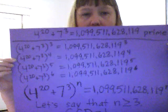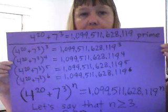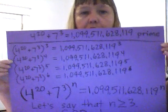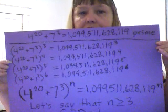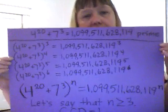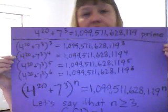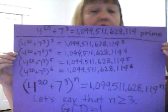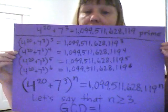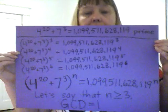Another equation — counter example. 4 to the 20th plus 7 to the 3rd equals 1,099,511,628,119 — another prime number. Take it to the 3rd, 4th, 5th, 6th, whatever power you want. Let's say that n is greater than or equal to 3. GCD equals 1.